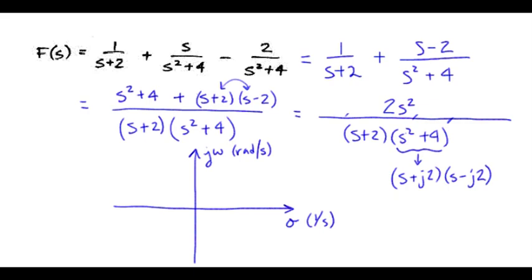On the top, we have an S squared term. So that means we have a zero at the origin. And we have two of those. So I'll put two in parentheses.